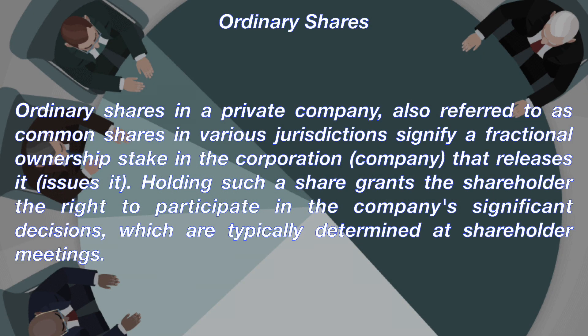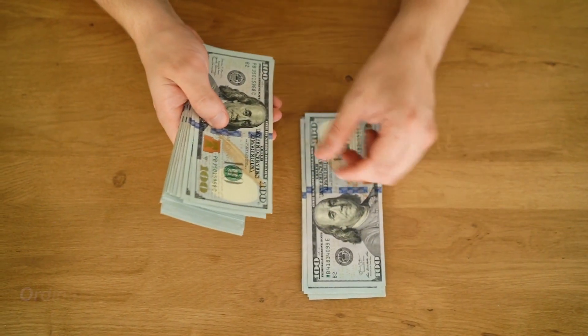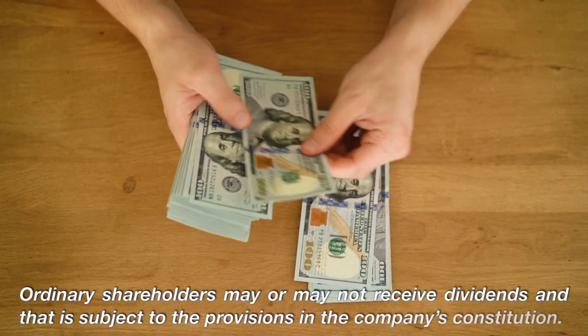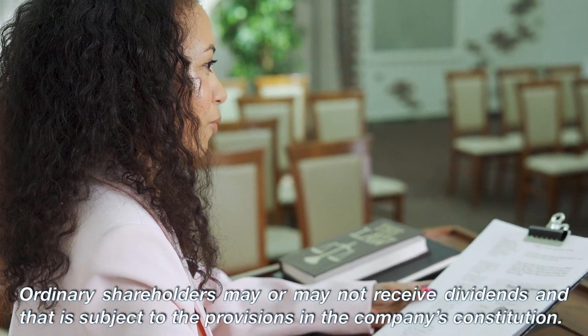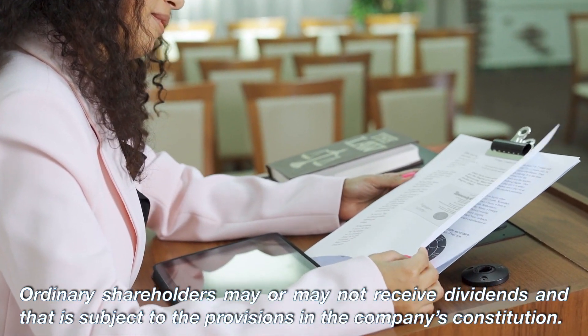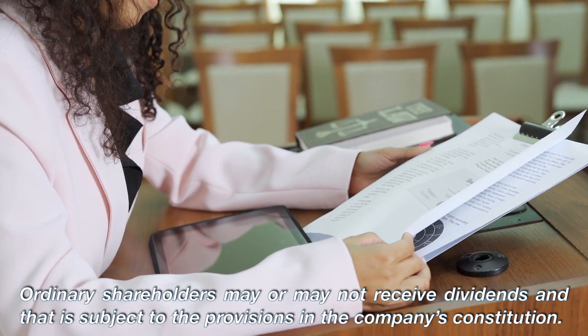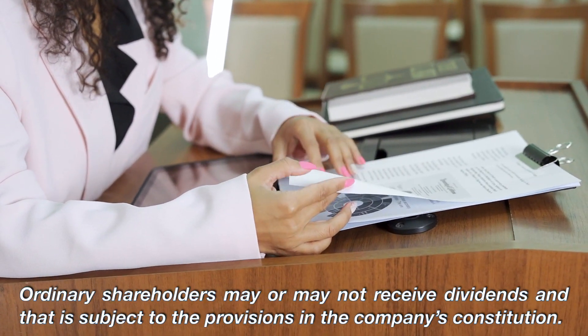So let's define ordinary shares. Ordinary shares in a private company, also referred to as common shares in various jurisdictions, signifies a fractional ownership stake in the corporation that releases it. Holding such a share grants the shareholder the right to participate in a company's significant decisions, which are typically determined at shareholder meetings. In addition to the voting rights, shareholders may or may not receive dividends, which depends on whether the constitution of the company stipulated such during the time of the company's incorporation or through an alteration at a later point in time.